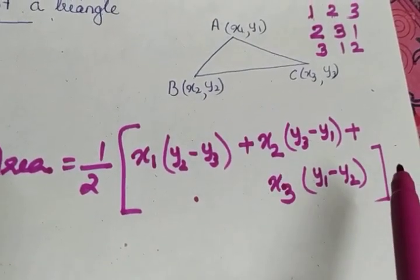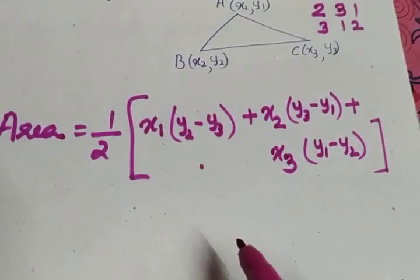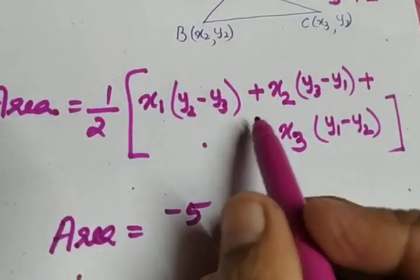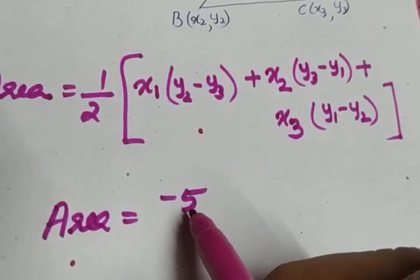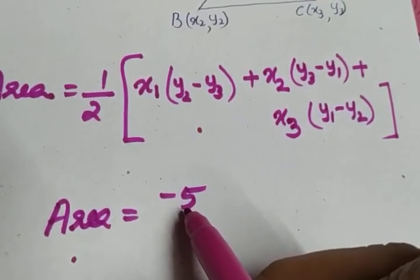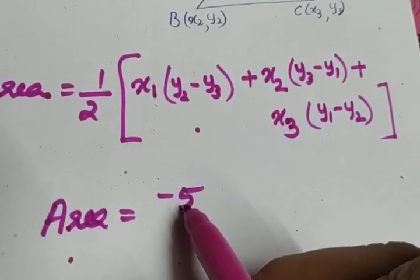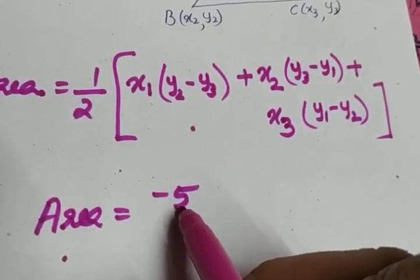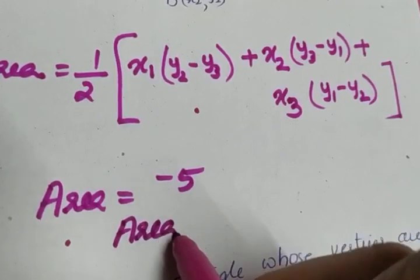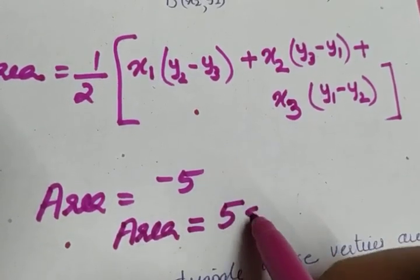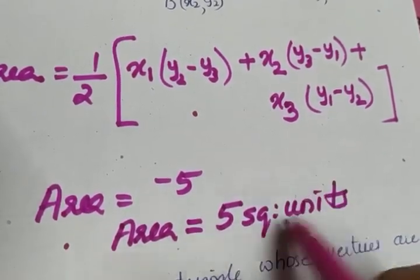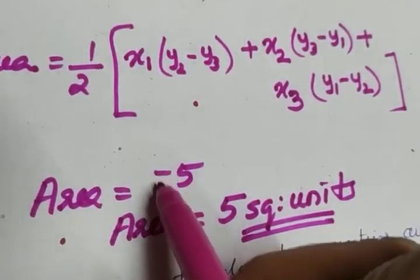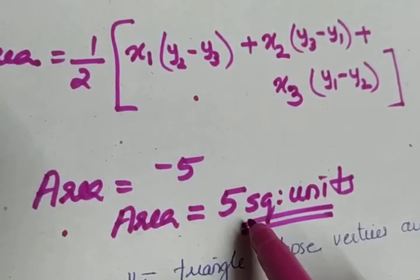There is a chance of getting the area as a negative number. Suppose after substituting into the formula you get the value as minus 5. We know area cannot be negative, but the calculation is not wrong — what makes the difference is the order we took. So if you get area as minus 5, in the next step rewrite it as area equal to 5 square units, simply avoiding the negative sign.